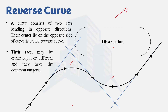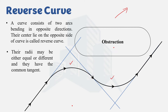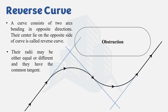The radii may be either equal or different, but the two arcs have a common tangent. A reverse curve is different from a compound curve — a compound curve is also a combination of two arcs, but in a reverse curve the two arcs bend in opposite directions. Note that if two arcs bend in the same direction and have the same radius, they form a single arc, not a compound curve. In a reverse curve, the radii can be equal but the arcs must bend in opposite directions.